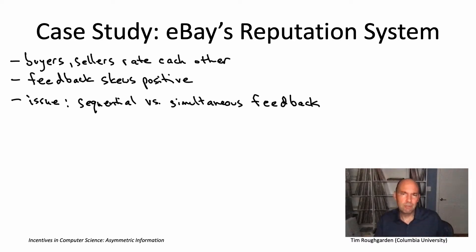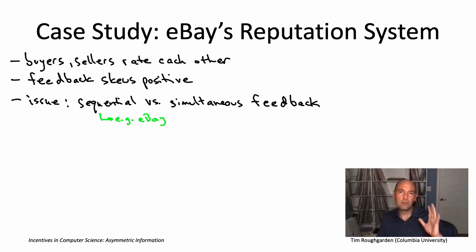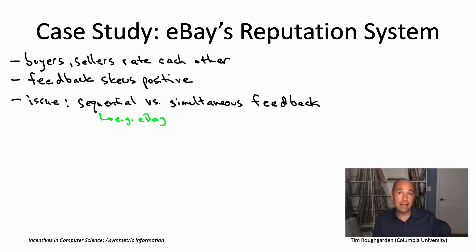This eventually became a big enough problem that eBay made a change to its reputation system. They kept the sequential aspect, but made it so sellers could no longer leave negative feedback on buyers. Sellers could only leave a comment and optionally a thumbs-up positive feedback. This decreased sellers' ability to retaliate against buyers who had rated them negatively.